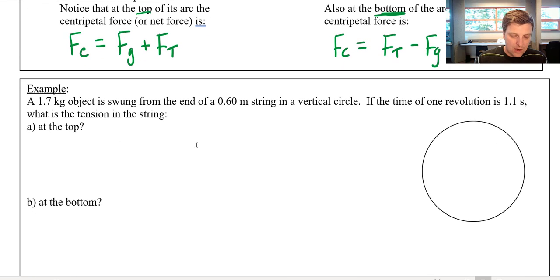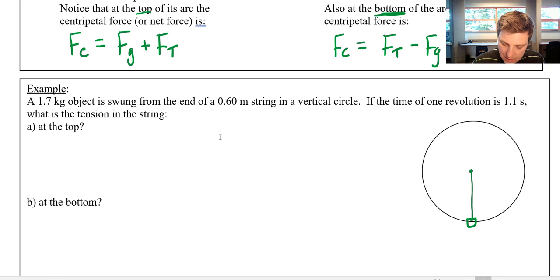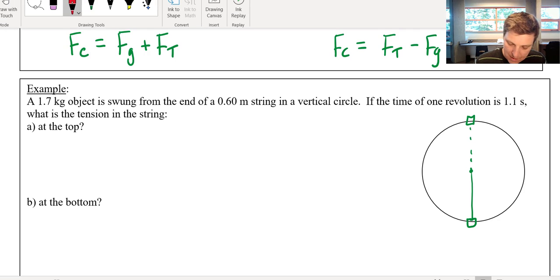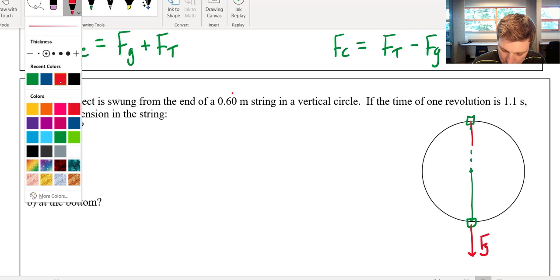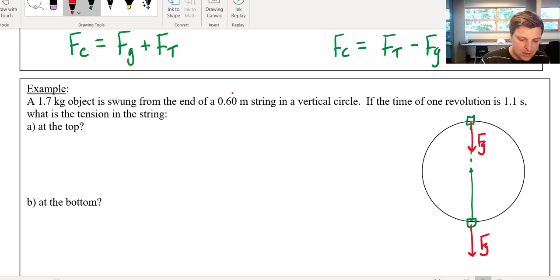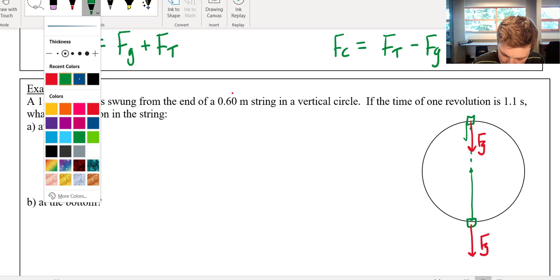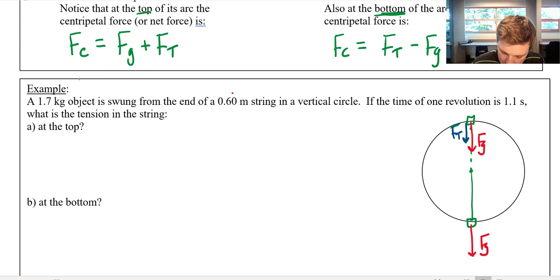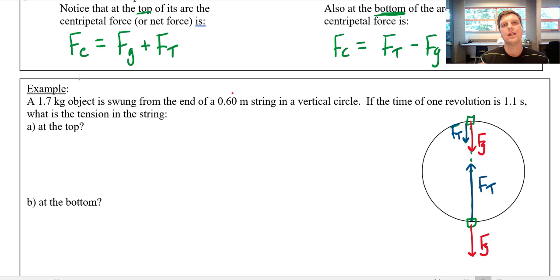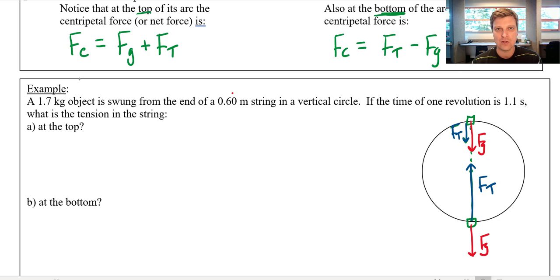A 1.7 kilogram object has been swung from the end of a string in a vertical circle. The time of one revolution is 1.1 seconds. What is the tension in the string? I'll redraw the free body diagram. FG is going to be the same in both locations, but what changes is the tension force. At the top, there's a small tension force downwards. At the bottom, there's a large tension force upwards. At the top, gravity and tension work together to accelerate the object down towards the center. At the bottom, tension has to work against gravity, so tension is much larger — it not only has to beat gravity, but it's also the only thing accelerating this towards the center.